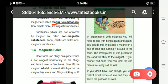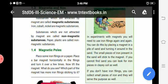What is meant by non-magnetic substances? Substances which are not attracted by magnet are called non-magnetic substances. Examples: paper, plastic, eraser. These are all non-magnetic substances.